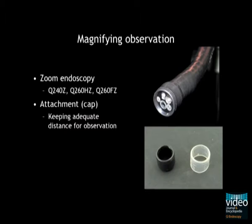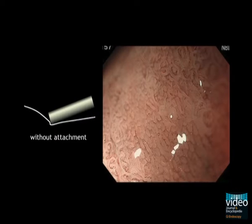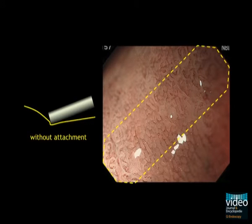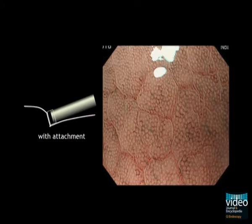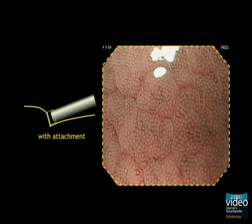When using a magnifying endoscopy, we always equip an attachment cap on the tip of the endoscope. Under magnifying observation, the depth of image field can be narrow, so when the mucosa is observed without the cap, it becomes oblique and only narrow areas are in focus. However, when a cap is used, the mucosa can be straightened towards the lens and the whole endoscopic image field can be focused upon.